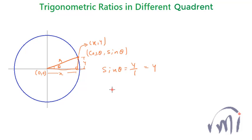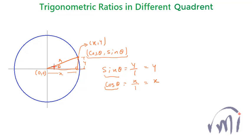So sin theta equals y, and cos theta — which is base divided by hypotenuse — equals x divided by 1, so the x coordinate of this point is cos theta. That is why they are represented like this. Now we are going to change this angle to 90 minus theta, 90 plus theta, and see how the values of cos and sin change. If we can fix the behavior of sin and cos, we can easily fix the behavior of tan, cosec, cot, and sec as well. So let's do that.